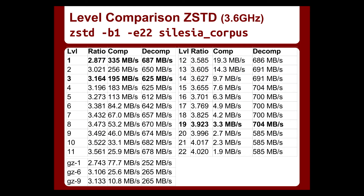I did a little benchmark compressing the Silesia compression corpus, the standard benchmark for compression. With the minimum level, you compress about 335 megs a second per core with a compression ratio of 2.8 to 1. The default gives you 3.16 to 1. The maximum level, without engaging ultra mode, gives you almost 4 to 1 compression but only at 3.3 megabytes per second per core, which might be a bit slow. Looking at GZip, the minimum only gets 2.7 to 1 compression at 77 megabytes a second, while at that same speed you could get 3.4 to 1 with ZStandard. And with GZip dash-9, you're barely getting the compression level that ZStandard achieves at 20 times the compression rate.